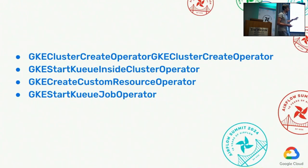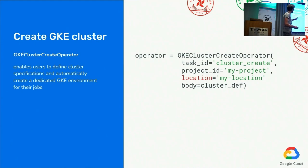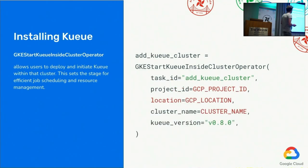Those four operators are the core to execute the example DAG. They are needed to set up the GKE cluster, set up Kueue and the resources that Rafał was talking about, run all the jobs, and then delete the cluster. First, the GKE cluster create operator — with this you can pass the cluster configuration and create a cluster in your GCP project. Next, the GKE start Kueue inside cluster operator — you specify the version of Kueue you want to run, and it fetches and installs Kueue in that specific version in your GKE cluster.